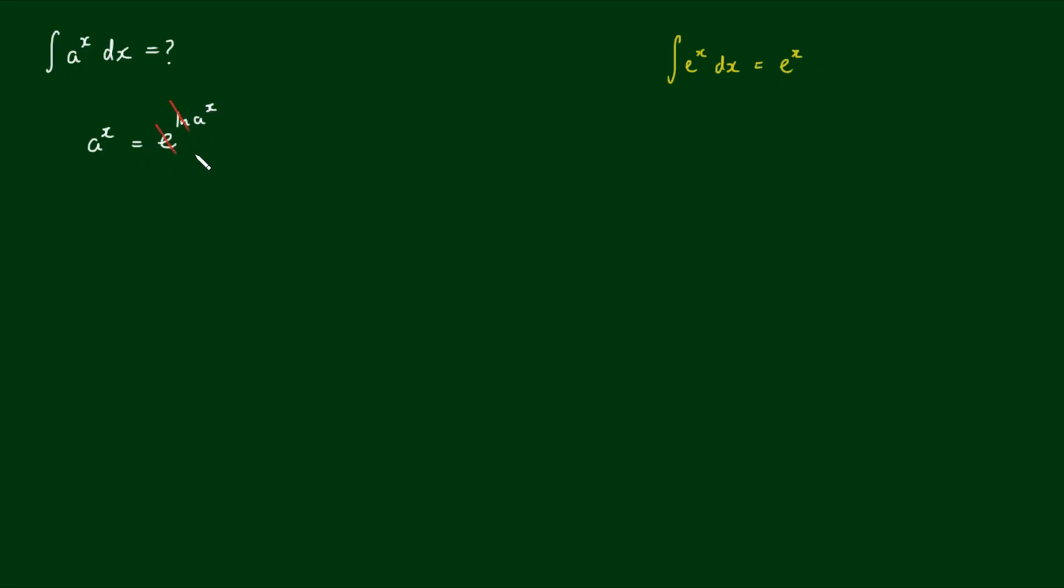These will cancel out to give me back my a to the x, but I'm going to keep it like this in this instance because I can move this x down to the front, so we get e to the x by the natural log of a.